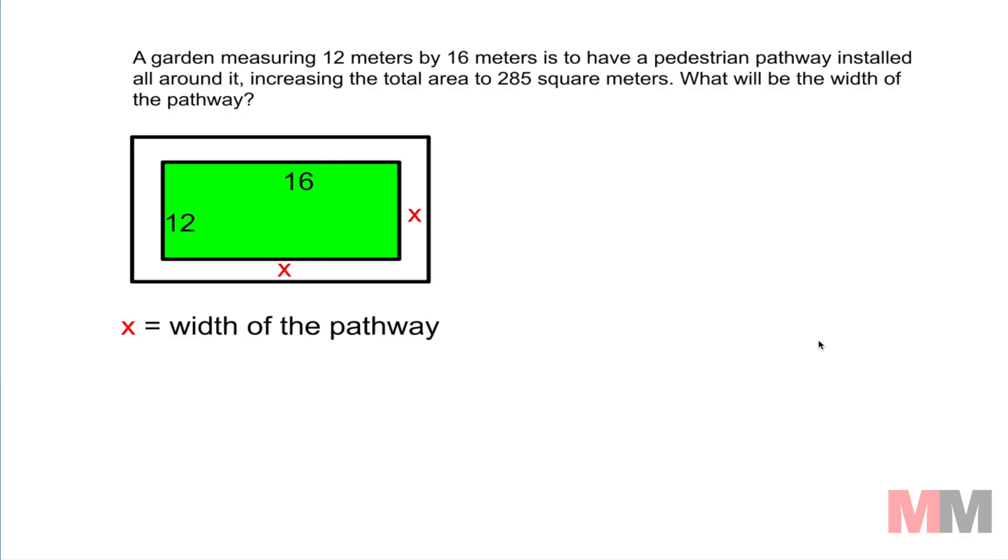Hopefully your diagram looks something like this. So this is my garden that they say the length is 12 and the width is 16, 12 by 16 meters and it says that there's a pathway all around it and that's what the word problem is about. We're trying to find the width and we're just going to call that x of this pathway.